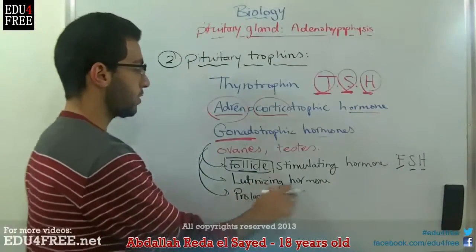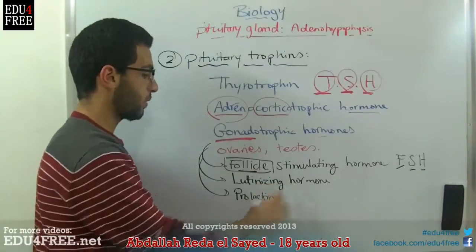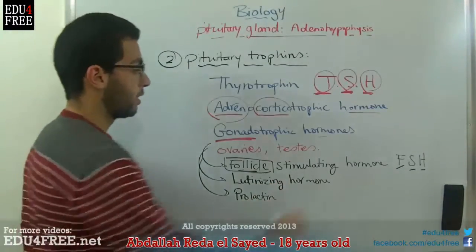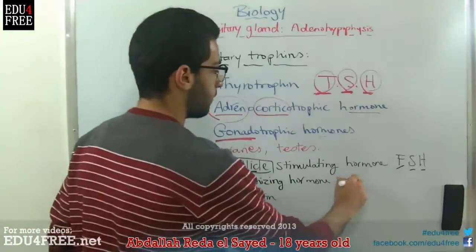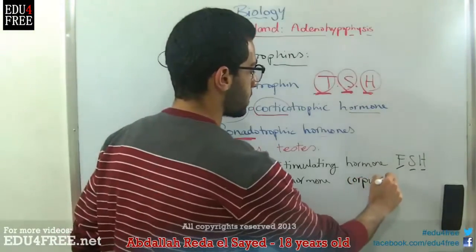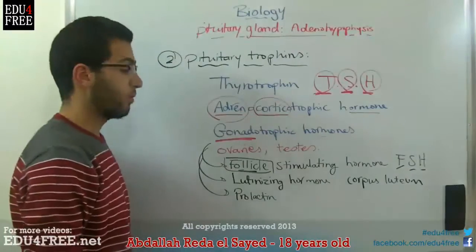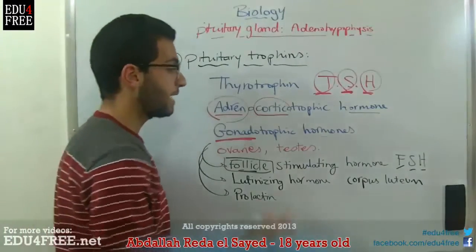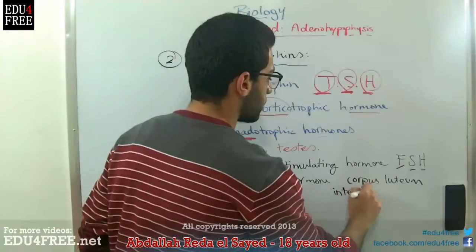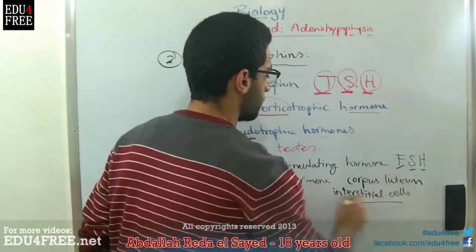We also have the luteinizing hormone. This hormone is responsible for the formation of the corpus luteum in females, and the formation and secretion of interstitial cells in males.